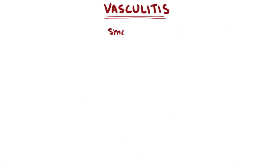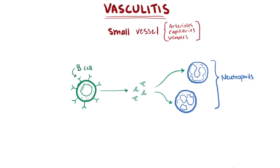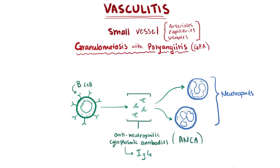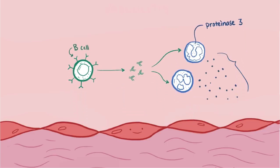Small vessel vasculitis affects arterioles, capillaries, and venules. In these diseases, B cells mistakenly target antibodies to granules made by the person's own neutrophils — one immune cell attacking another. These antibodies are called antineutrophilic cytoplasmic antibodies, or ANCAs, mainly of the IgG type. In granulomatosis with polyangiitis (GPA, formerly Wegener's granulomatosis), B cells release C-ANCA, which targets proteinase 3 on neutrophil membranes. C-ANCA binding causes neutrophils to release oxygen free radicals, indirectly damaging nearby endothelial cells and causing vasculitis.